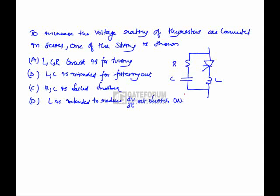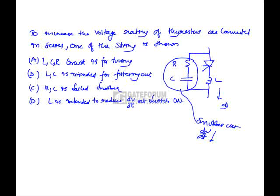To increase the voltage rating, the thyristors are connected in series. One of the string is shown here. If you see this connection, this connection RC in series is called snubber circuit. It is used to suppress dV by dt. Now what is this L? L is to reduce di by dt max, which is across the thyristors.